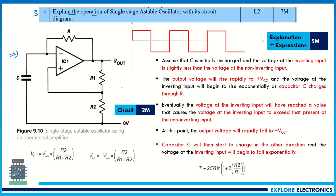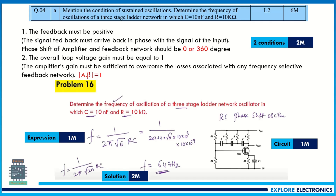The fourth question is on oscillators again — mention the conditions for sustained oscillation, which is the first half, and then determine the frequency of oscillations of a three-stage ladder network oscillator given the C and R values. The conditions for sustained oscillation are based on the Barkhausen criteria: the feedback must be positive, the overall loop voltage gain (amplifier gain × feedback factor) must equal one, and the total phase shift must be 0° or 360°. These two conditions carry two to three marks.